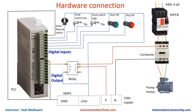Now we will understand the hardware connection of our project. First, the source/sink of the input will be connected to the ground of the SMPS. From there, we take 24V supply and connect it to one terminal of the selector switch, and the other terminal of that switch we connect to input X0.